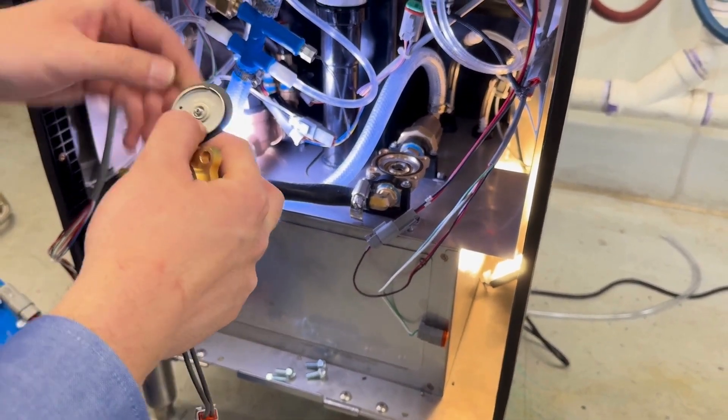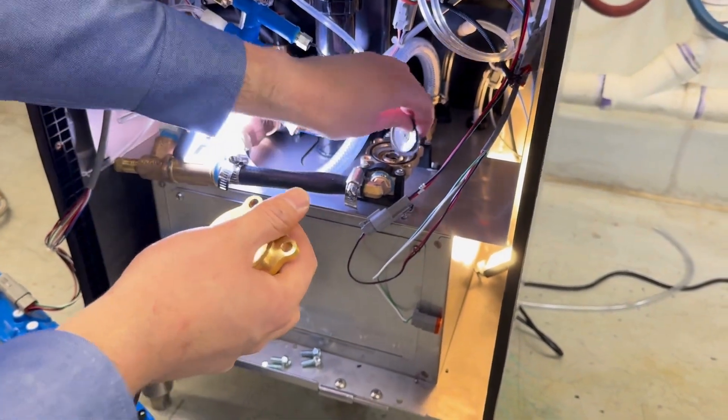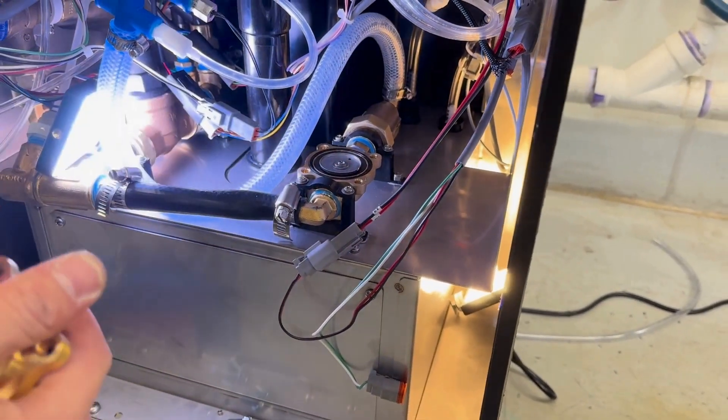On the diaphragm itself, you'll see on the metal it says 'this side up'. I'm going to lay that onto the body of the water valve, making sure the side that says 'this side up' is facing up.